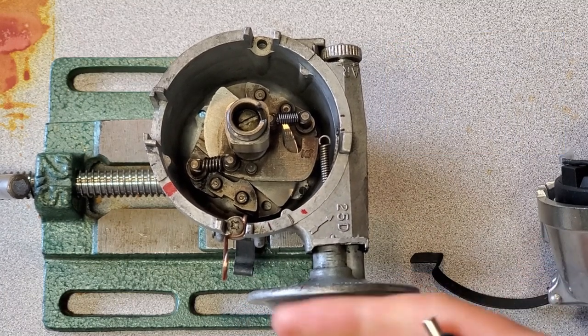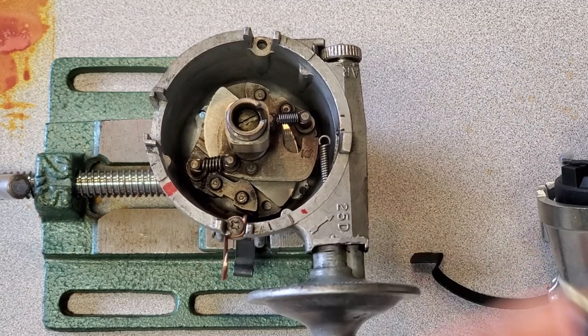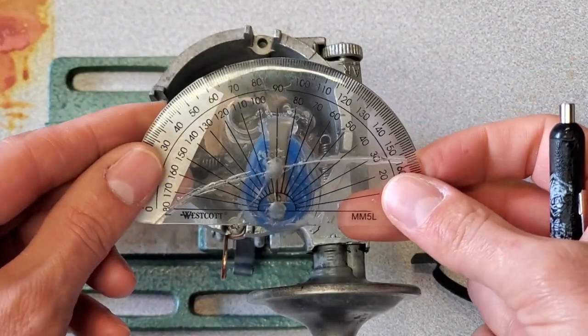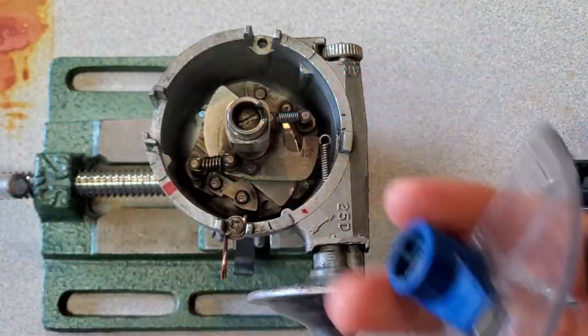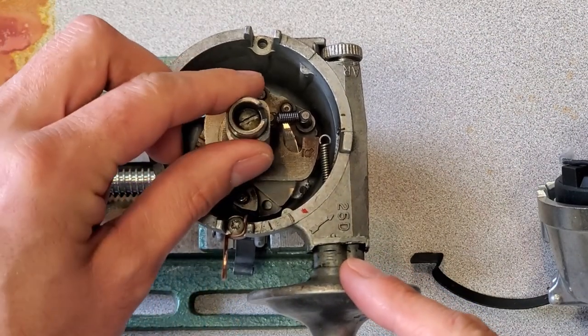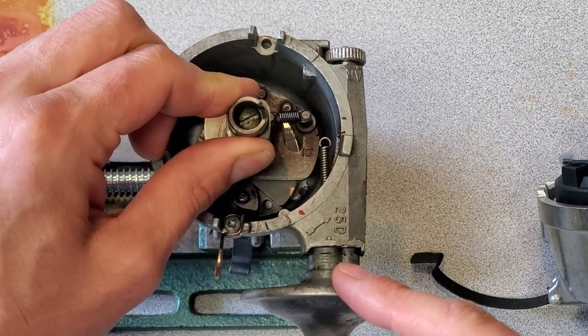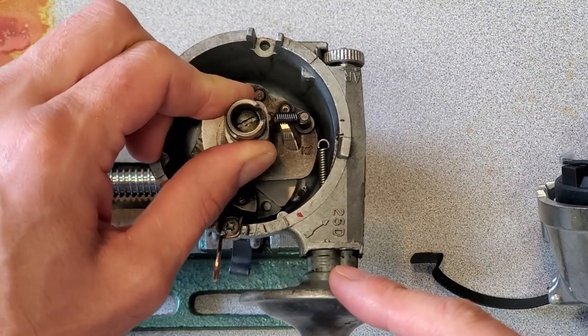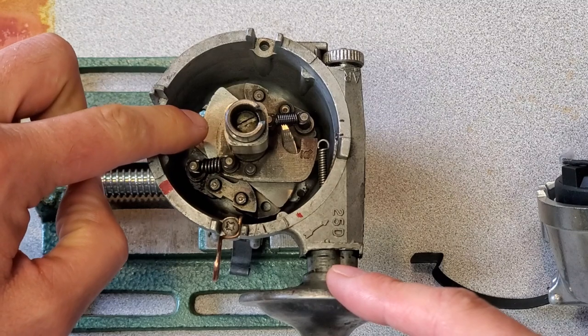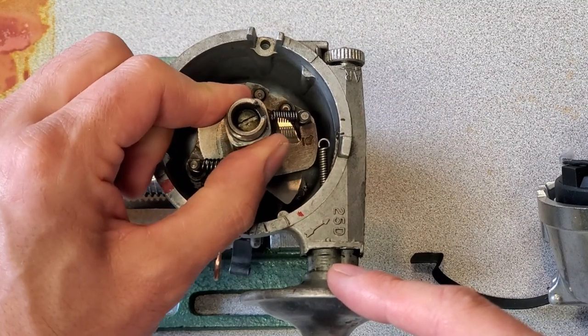So what I have currently set up is a pointer here, and I have my ignition rotor with a protractor attached to it. I'm going to attach that to here, align the pointer to zero, and when I rotate the cam until it hits the stops, that's total advance. That's exactly what I'm trying to measure - how much advance does the mechanical system in here impart on the shaft.